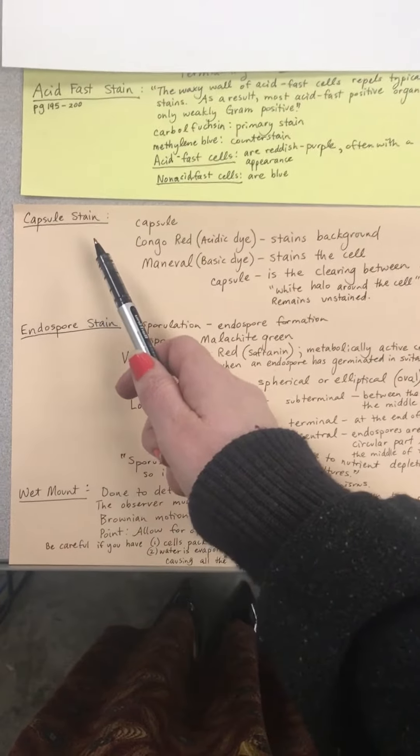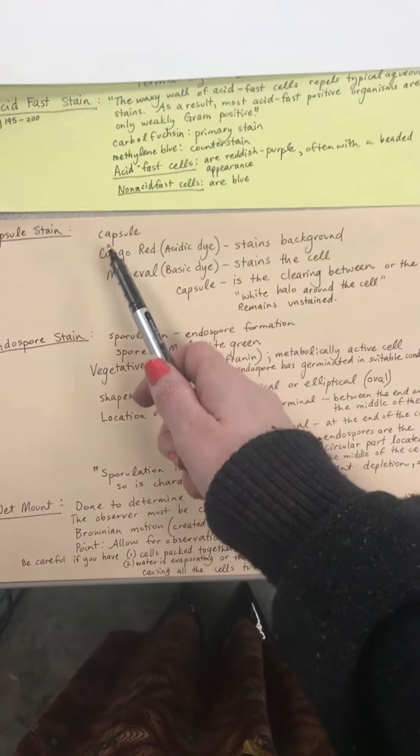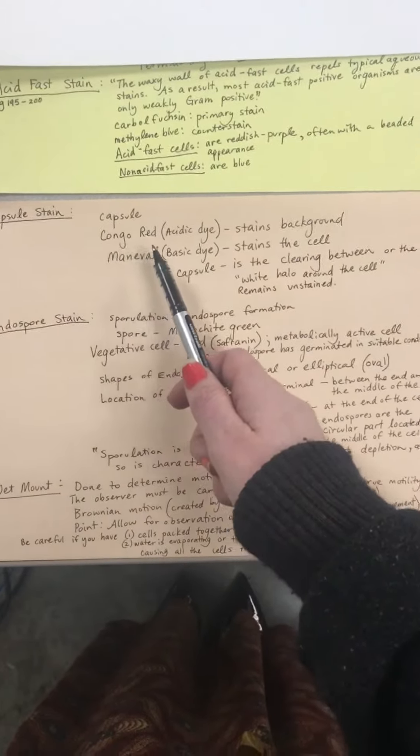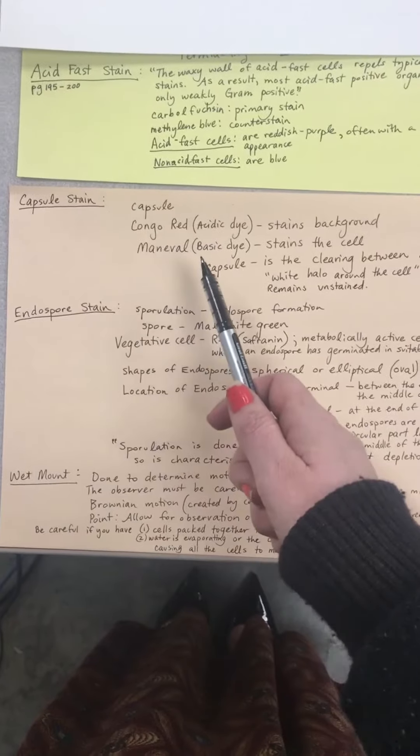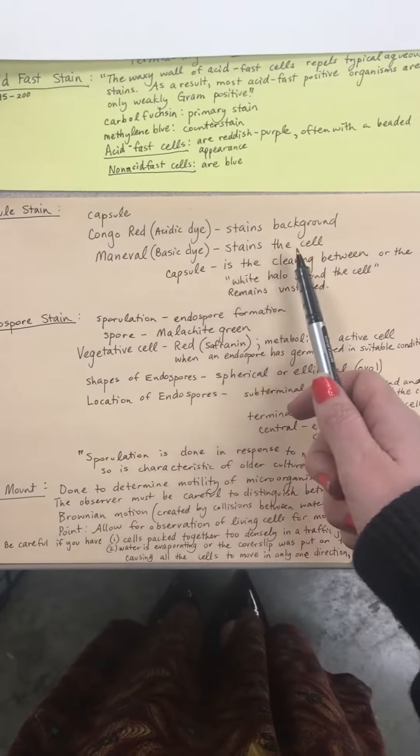Moving on to your capsule stain. You're looking for capsules. The Congo Red is an acidic dye that stains the background. The Maneval is a basic dye that stains the cell.